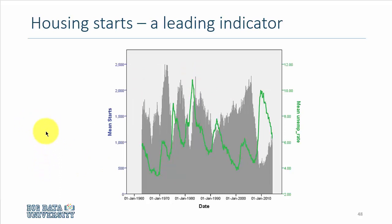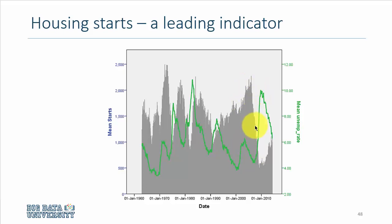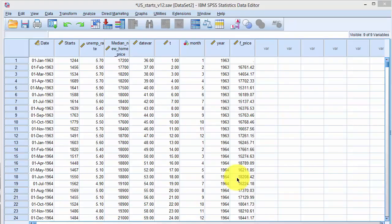Lastly, we are looking at two time series depicted simultaneously. In green, you see the unemployment rate, and the gray colored bars represent housing starts. You would see they are sort of negatively correlated.